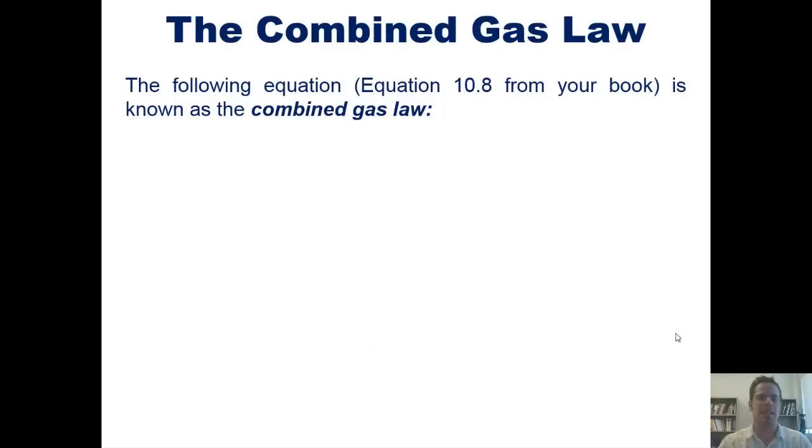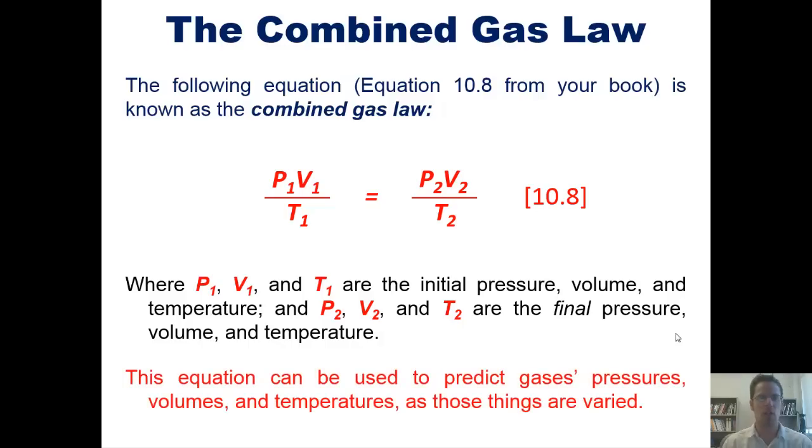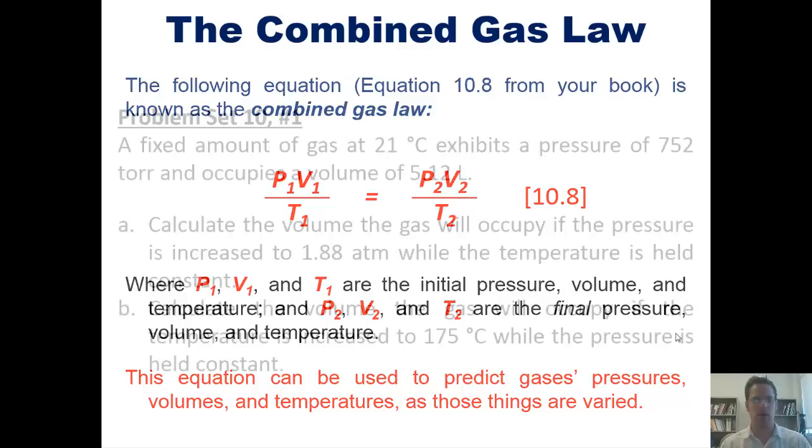So, the following equation right here is known as the combined gas law. It combines and interrelates elements of pressure, volume, and temperature. So, P1, V1, and T1 are all initial pressure, volume, and temperatures. While P2, V2, and T2 are all final pressure, volumes, and temperatures. This equation can be used to predict gases, pressures, volumes, and temperatures as those things are varied. Let's go ahead and use that by looking at a problem.